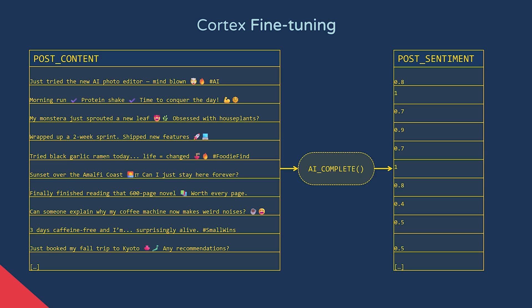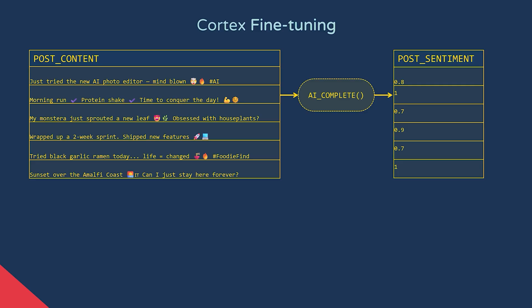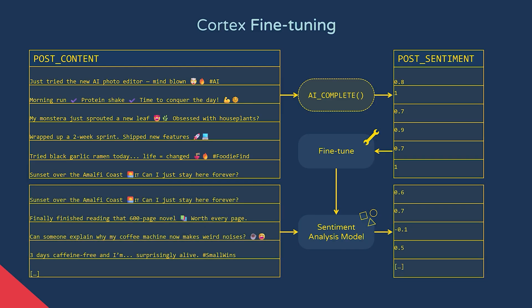So the idea behind Cortex fine-tuning is that we first create a sample dataset using a large model — in this case labeling a subset of posts with sentiment — and then use the output to create a fine-tuned smaller model tailored to doing that specific task. We can then use that to score sentiment on additional posts with higher accuracy than the smaller base model would have done if not fine-tuned.